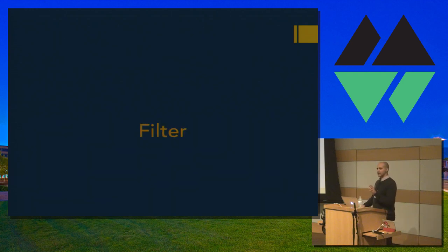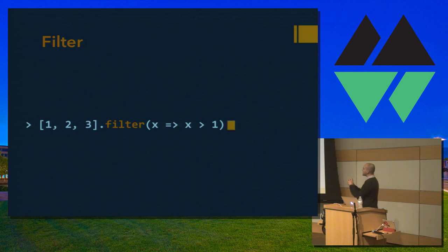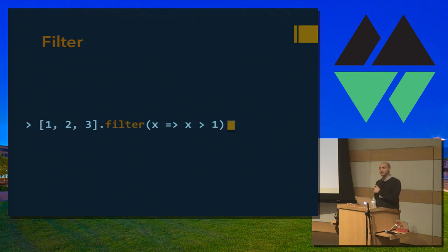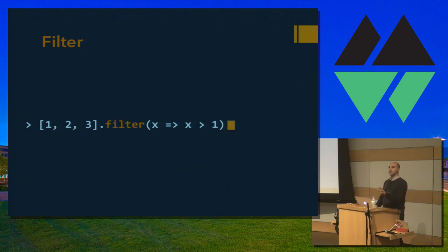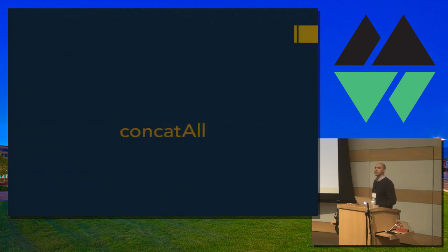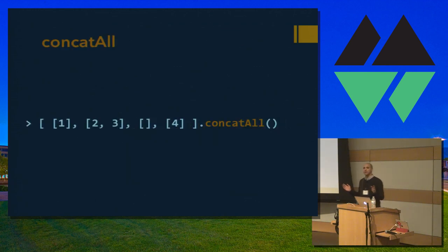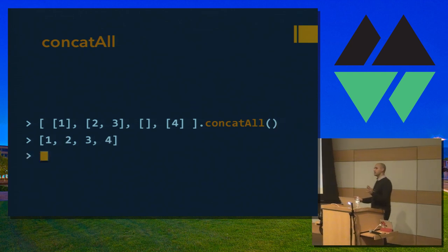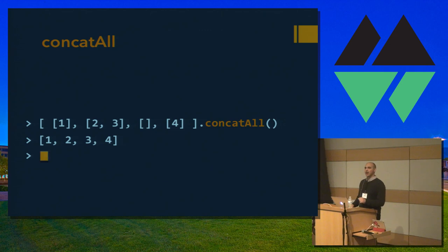Filter creates a new collection — in fact all the operators I'll show you, with the exception of forEach, create a new collection. In the case of filter, we apply a test function to each item, and if it doesn't pass the test, we leave it out. So given one, two, three filtering for greater than one, we get two, three. ConcatAll is a method that doesn't exist in JavaScript yet, but it takes a multi-dimensional collection and flattens it by one level, giving us one, two, three, four.